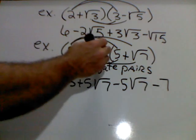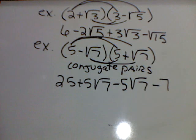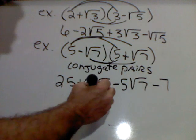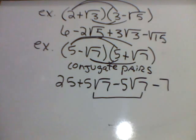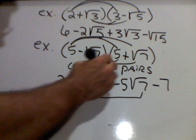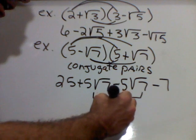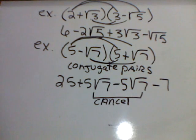Remember, radical times itself gives me that number. But, what I want you to notice about the conjugate pairs, look what happens to these radicals. One's positive 5, one's negative 5. The radicals match up. So, these cancel each other out.